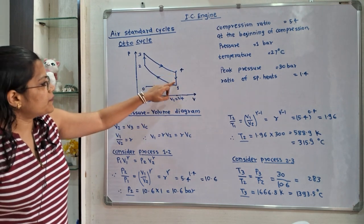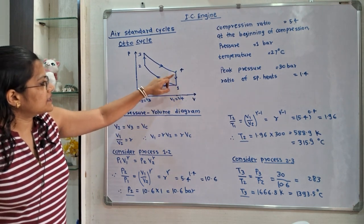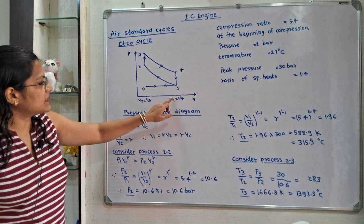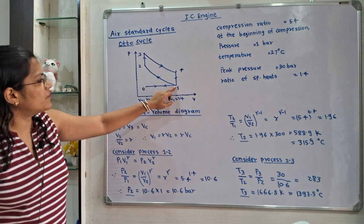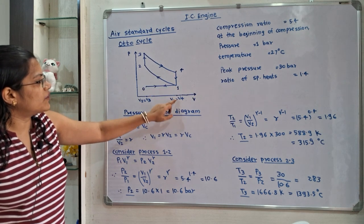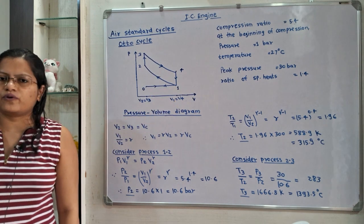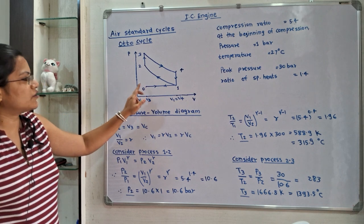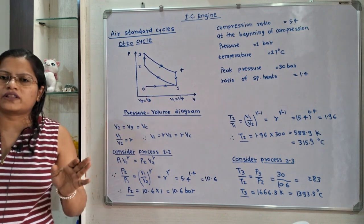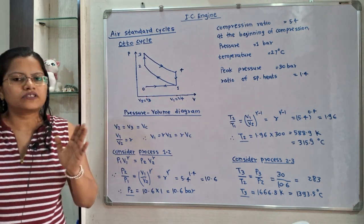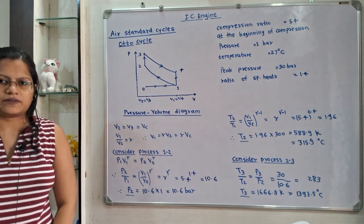During the heat rejection process, the volume V1 is equal to V4. And again, 1 to 0 is the exhaust process.